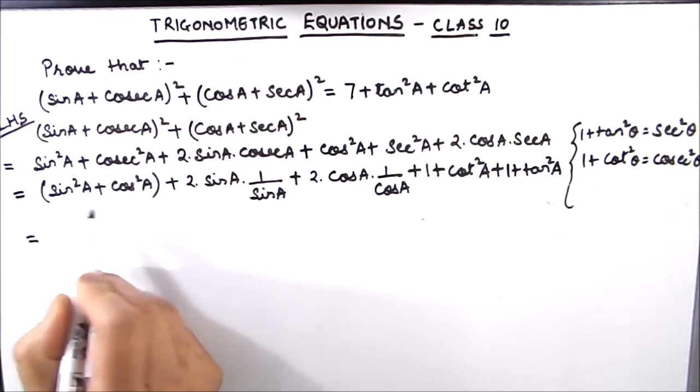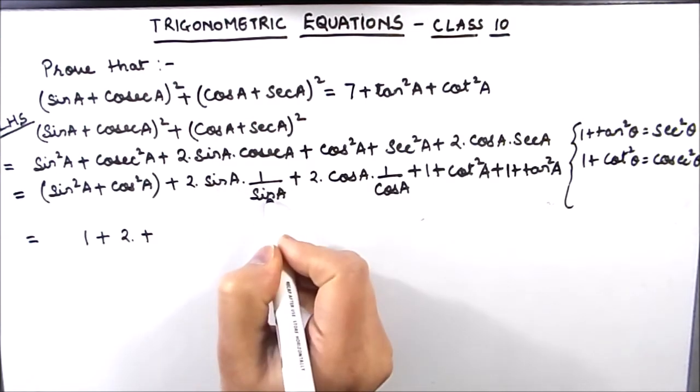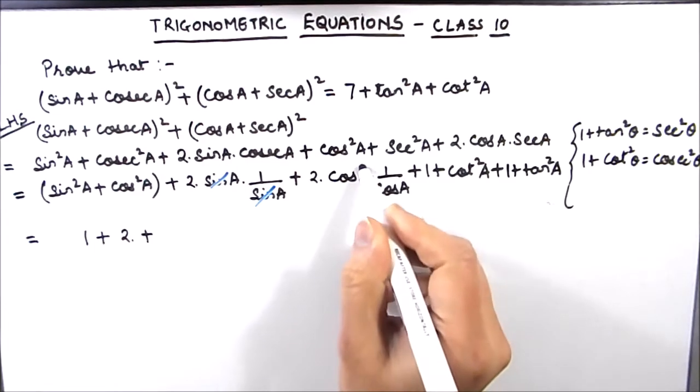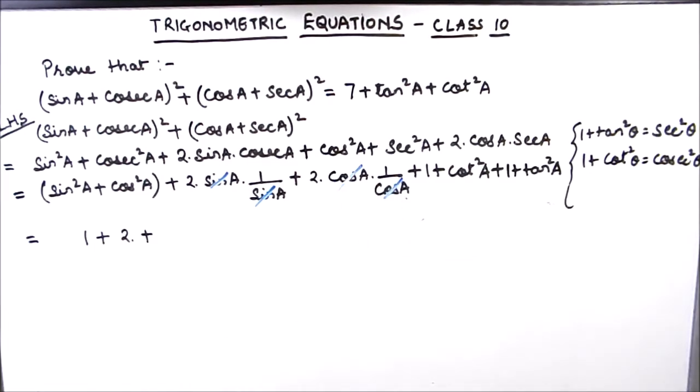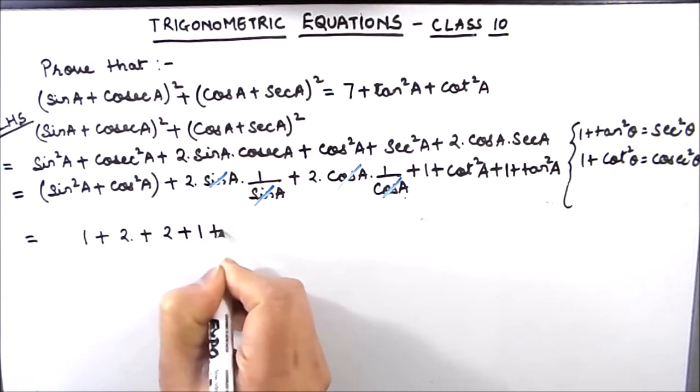We know that sin² A + cos² A = 1. So this whole term will reduce to 1. And then we have 2 times sin A divided by sin A, which is 1. This gets cancelled. And cos A divided by cos A is 1, plus 2, and then plus 1 plus 1.